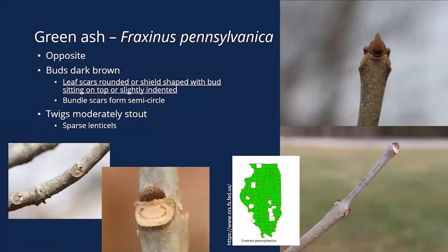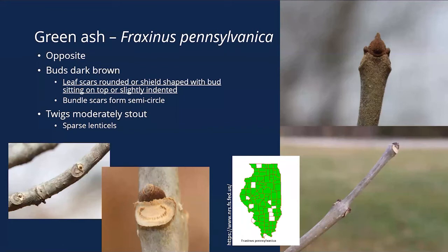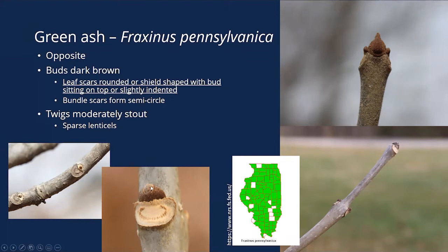Green ash is very similar — opposite, dark brown buds — but the leaf scar is the key difference. On green ash, the leaf scar is a rounded or shield shape that sits below the bud, so the bud sits above the leaf scar. On white ash, the bud is nestled down into the horseshoe-shaped leaf scar. Bundle scars also form a semicircle. Twigs are moderately stout as well. The position of the bud relative to the leaf scar is the most reliable way to tell white ash from green ash.